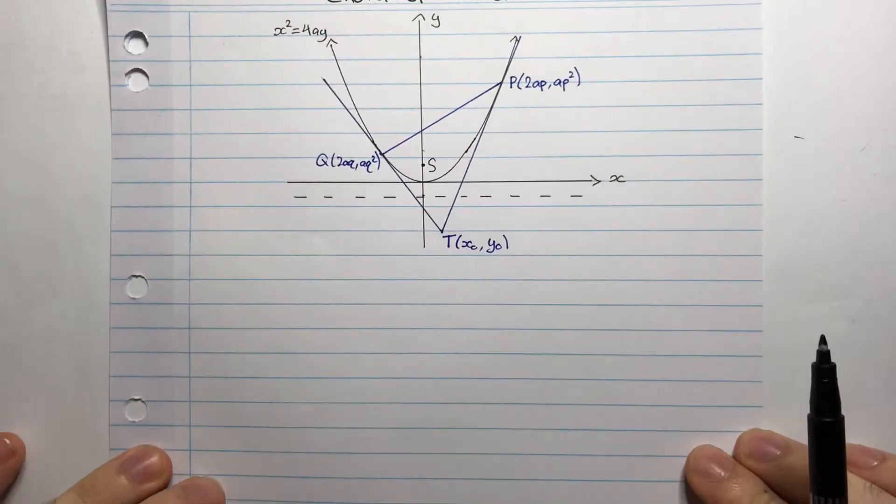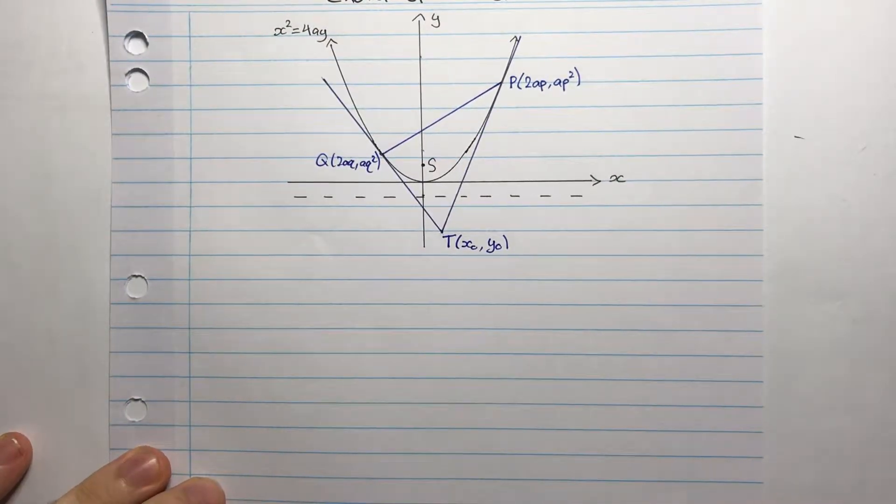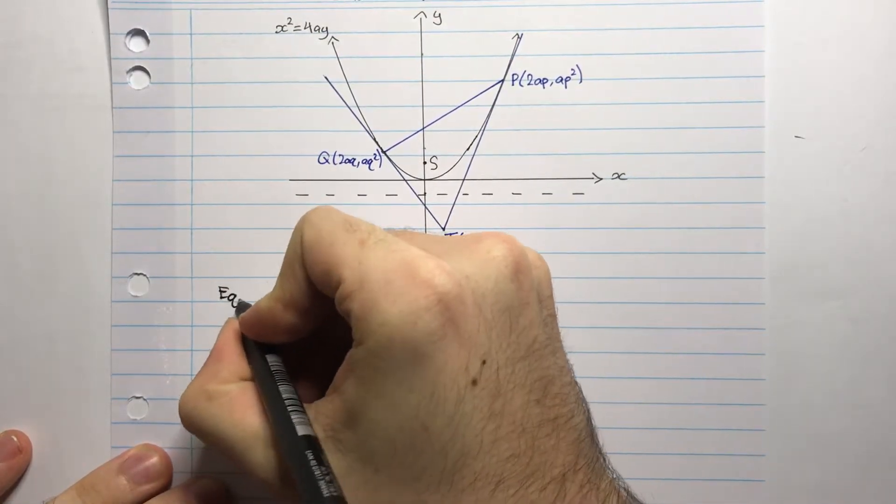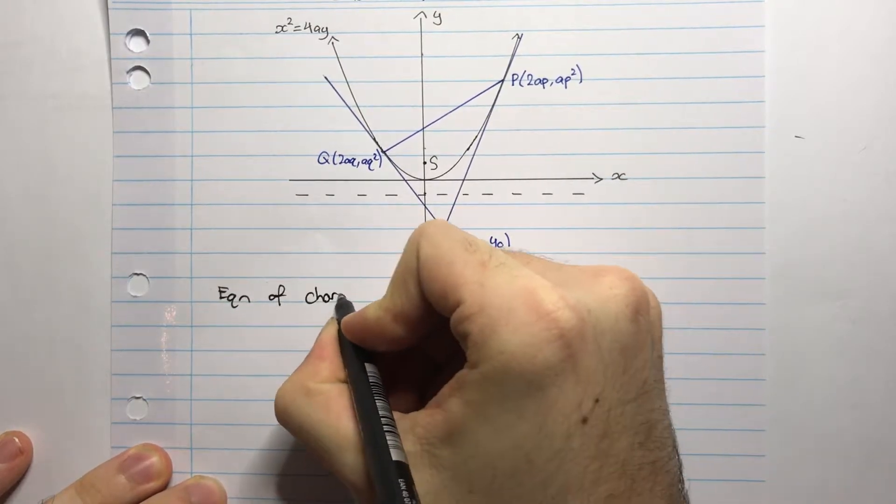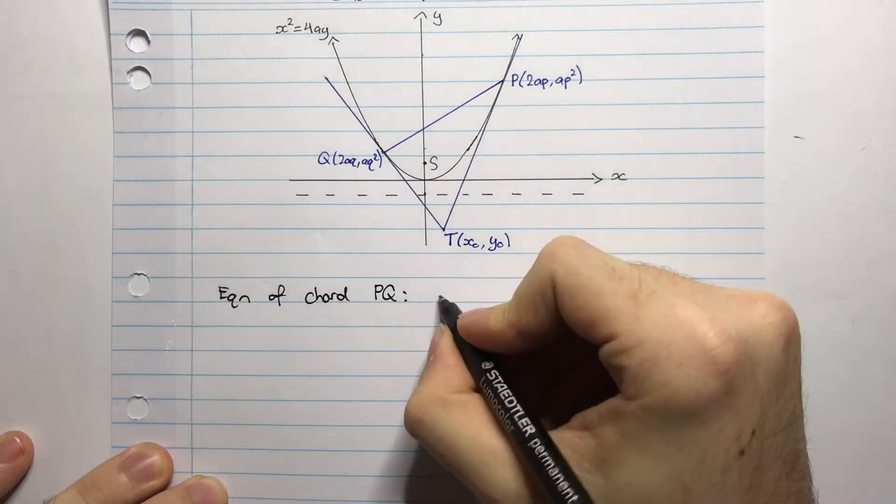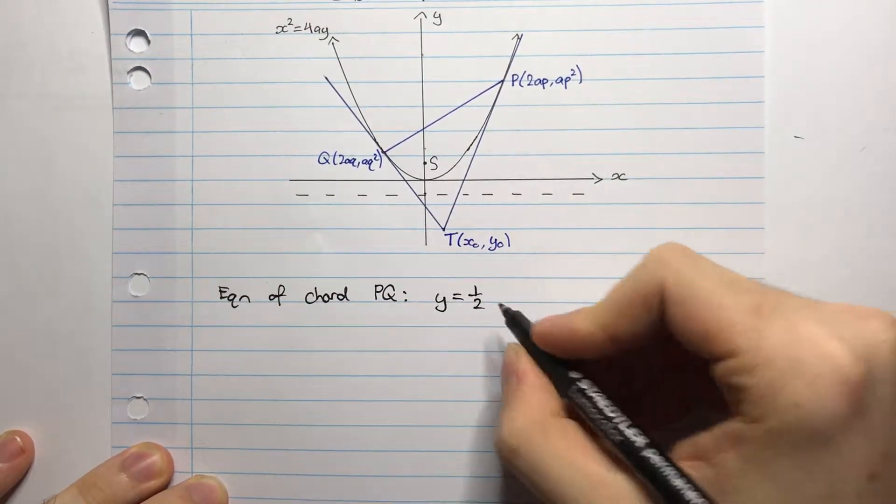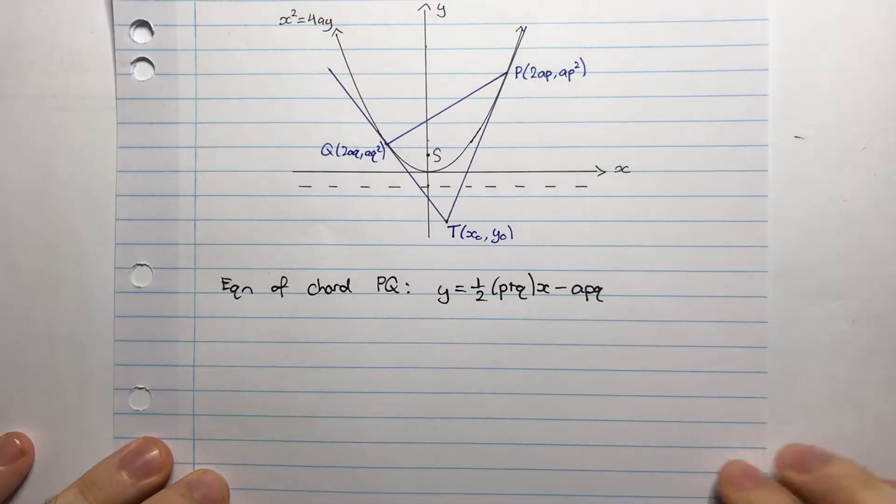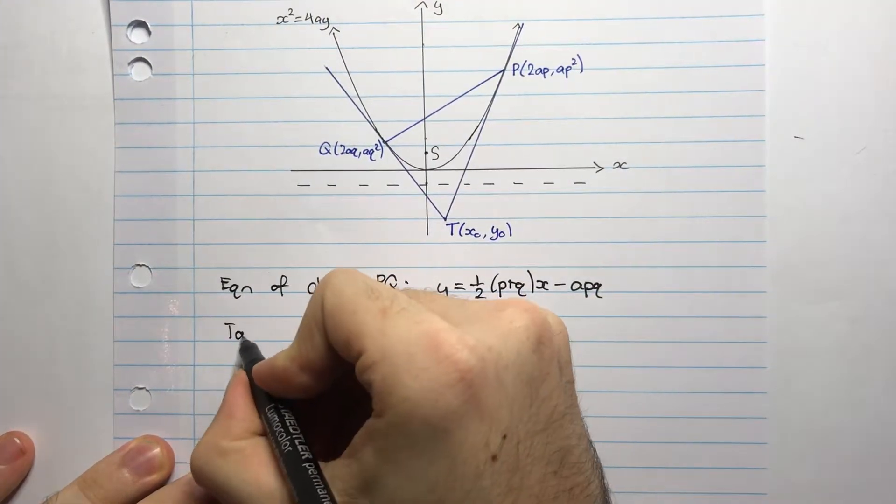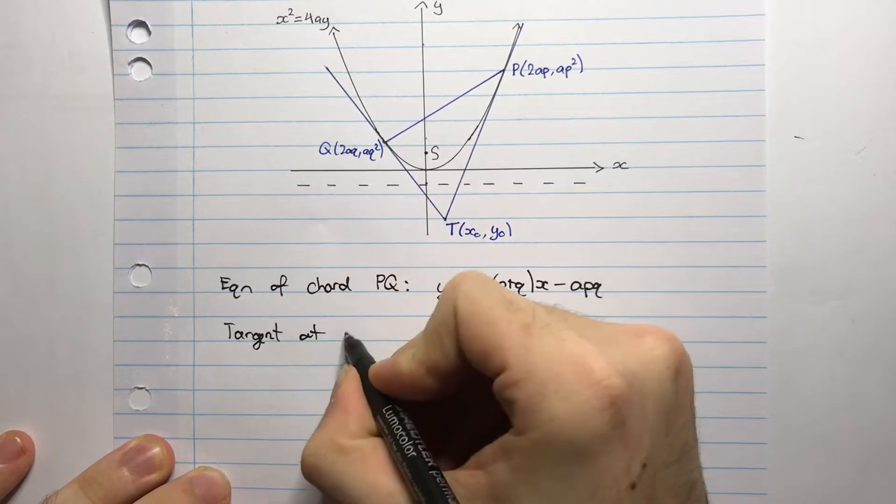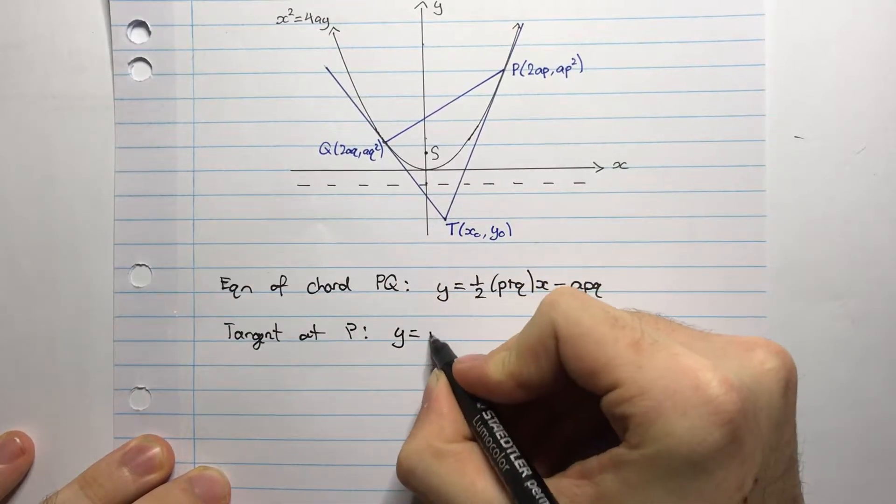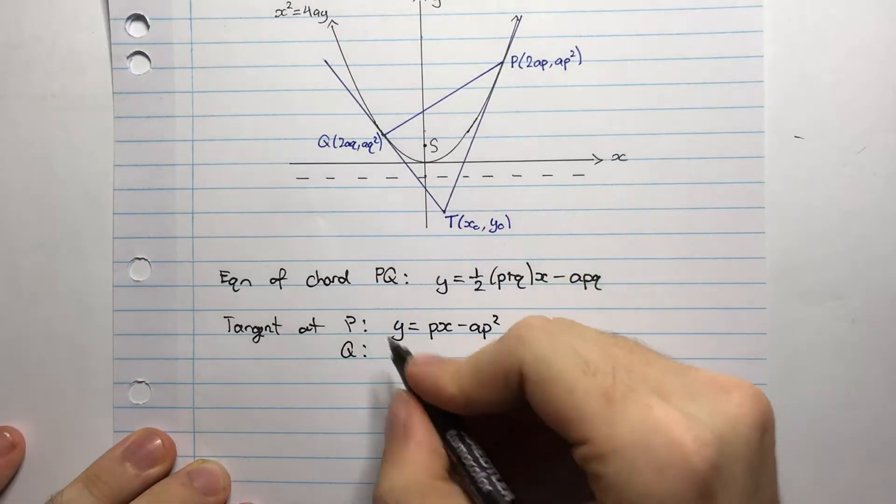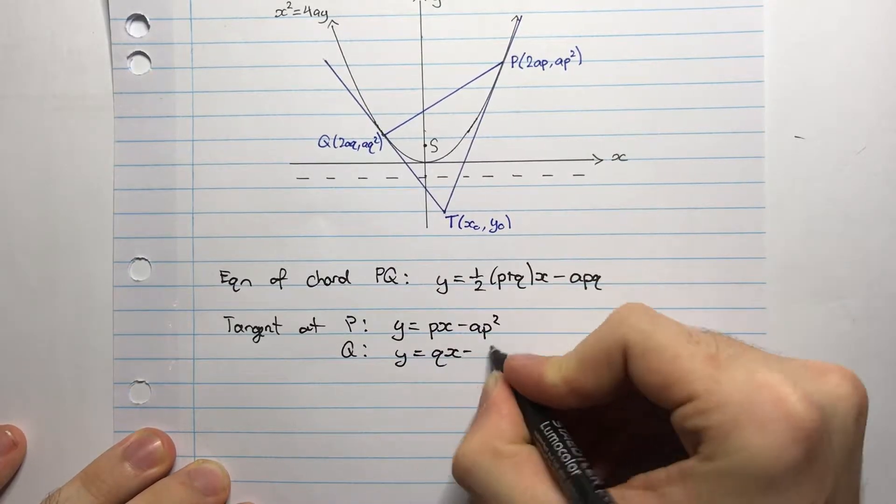So to do that we are going to first recall a few things that we've already proven in previous videos. So the equation of chord PQ was given by the following: y equals one-half P plus Q X minus APQ. Now the tangent at P is given by y equals PX minus AP squared, and similarly at Q it's given by y equals QX minus AQ squared.